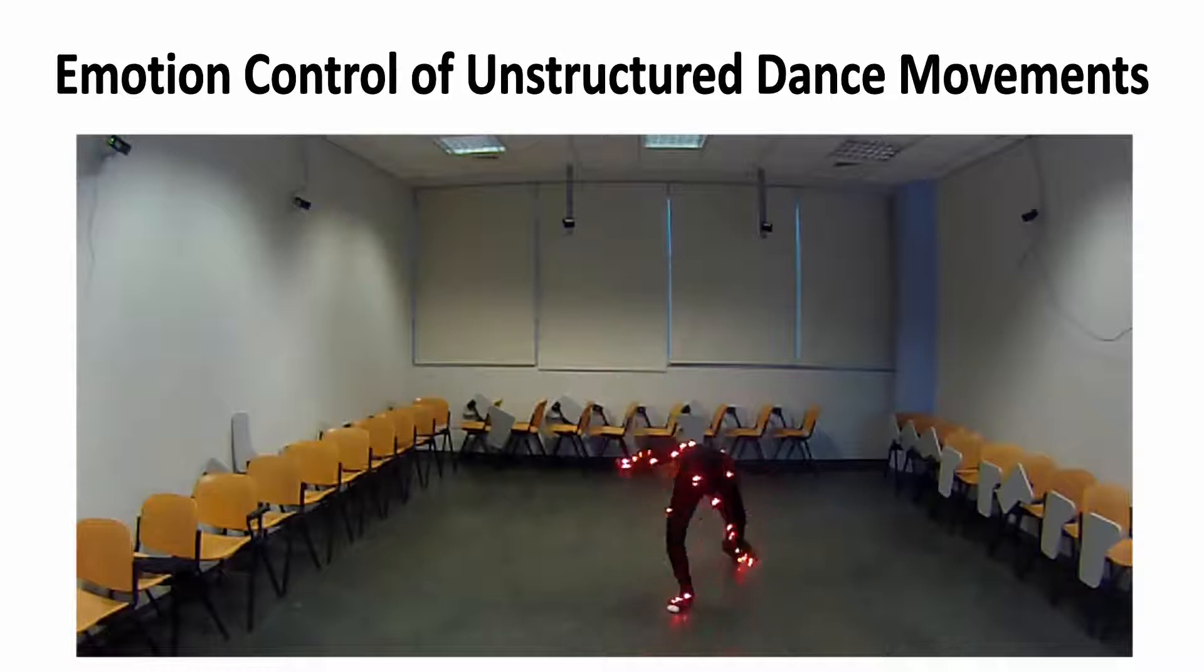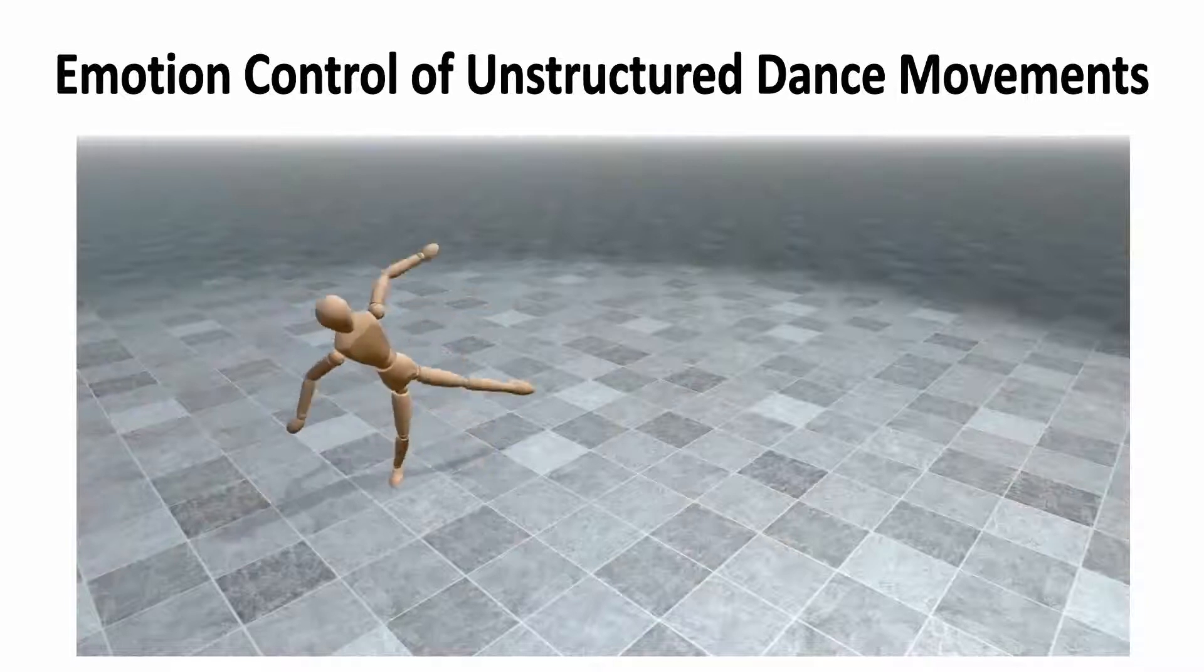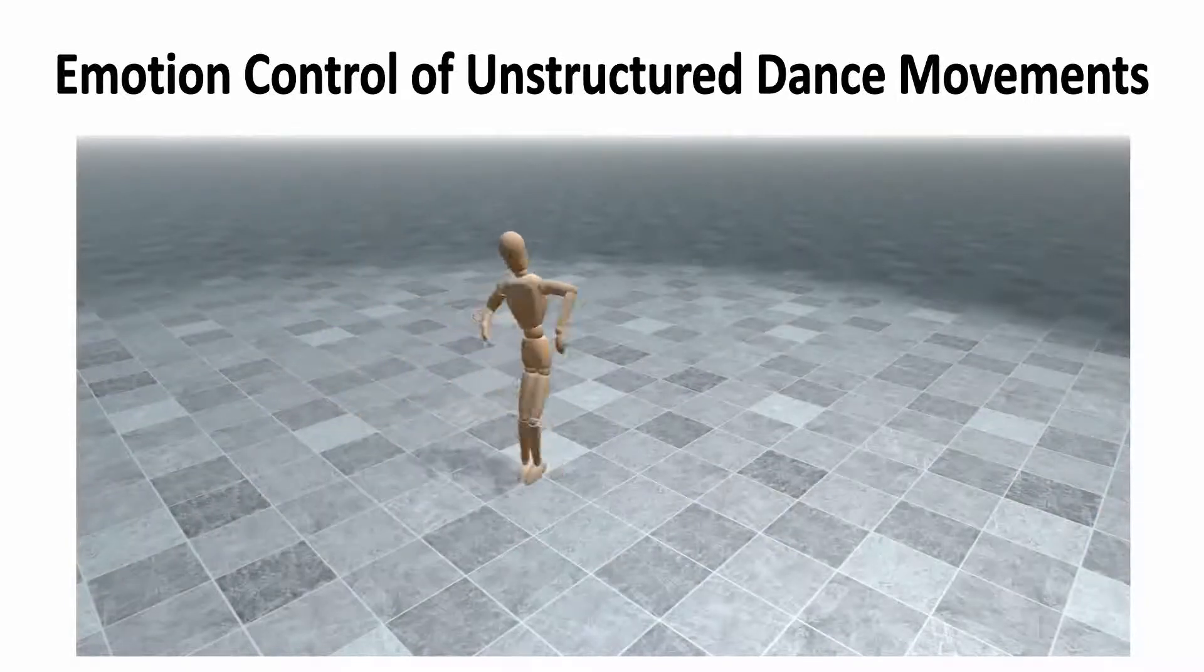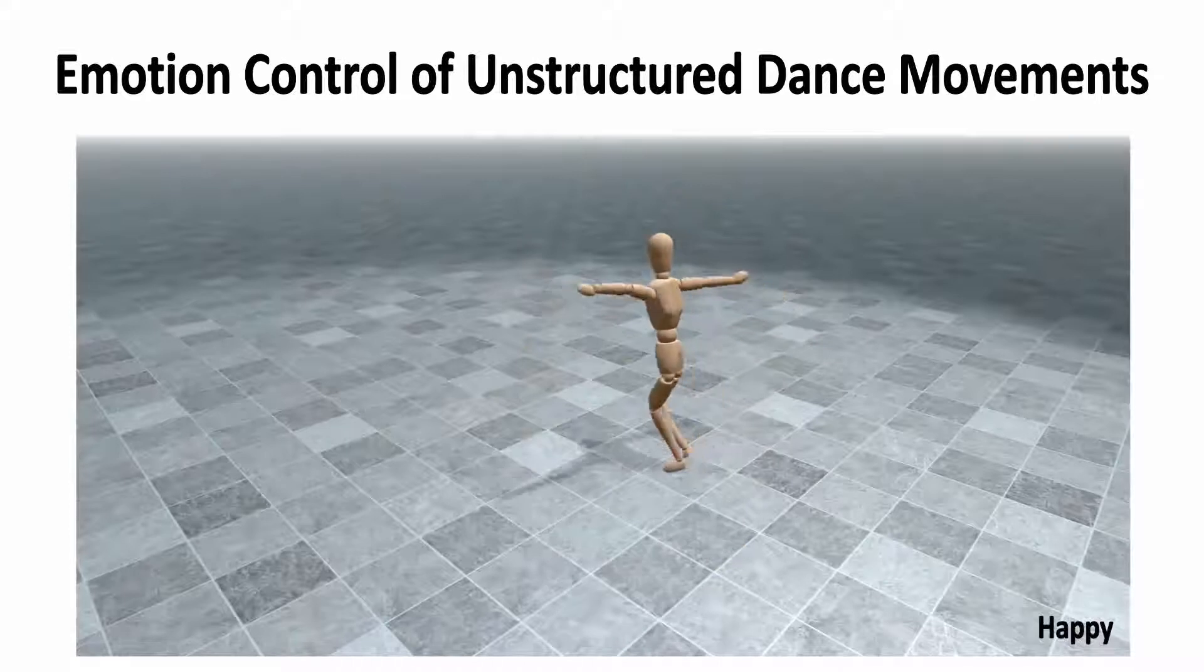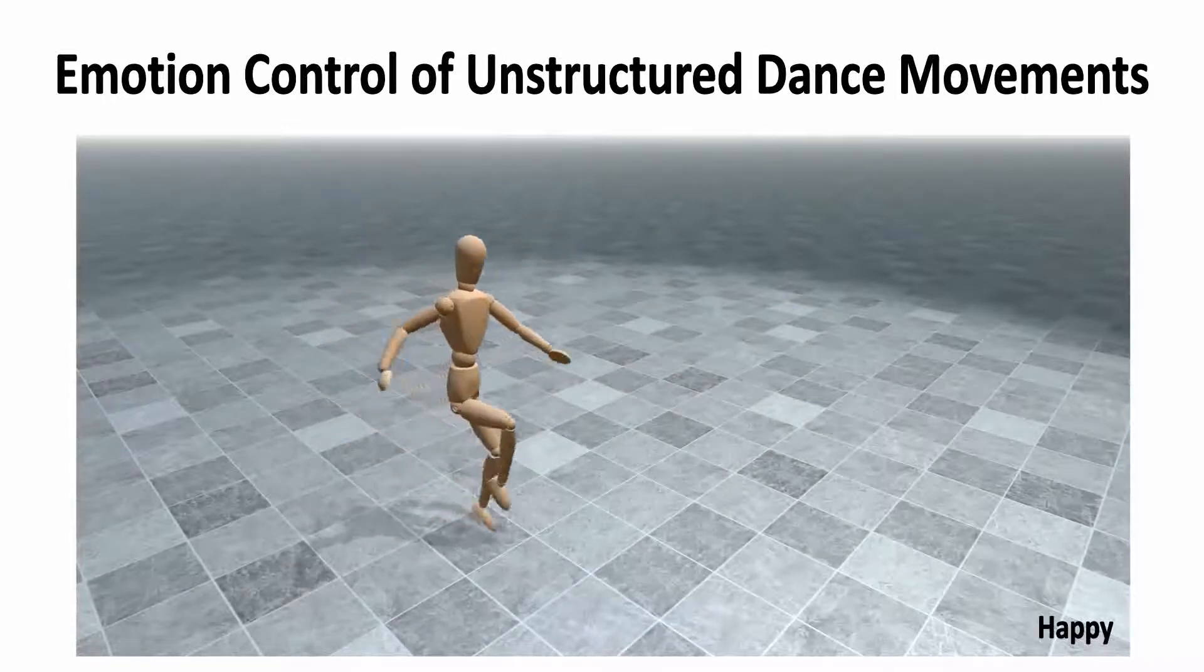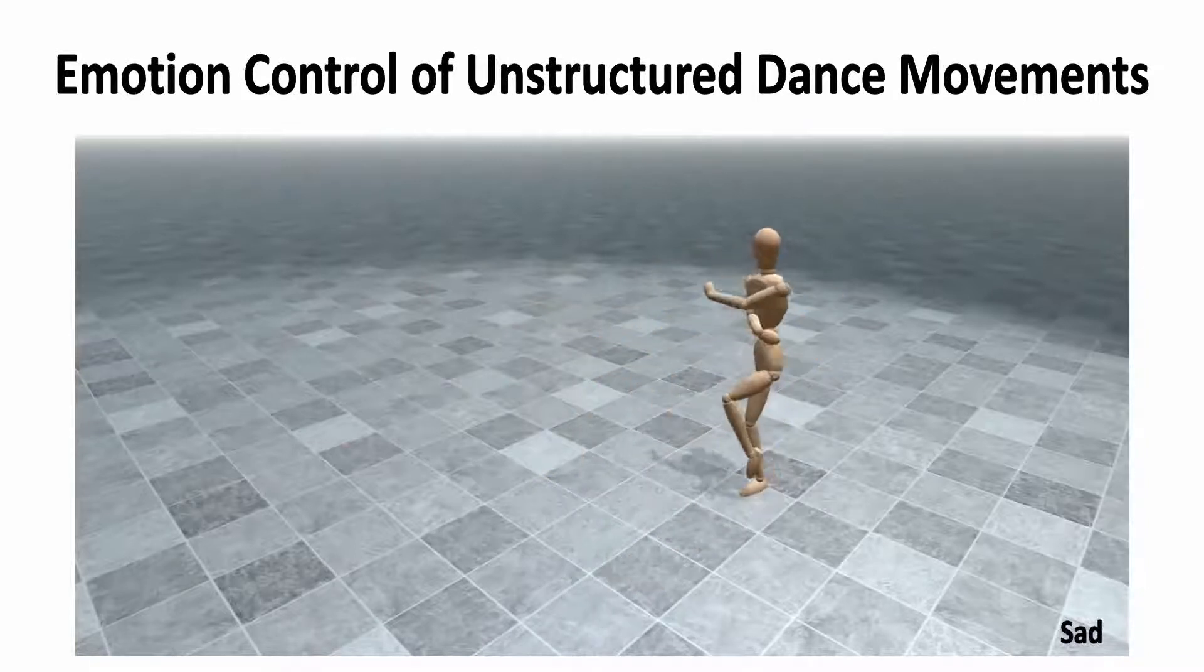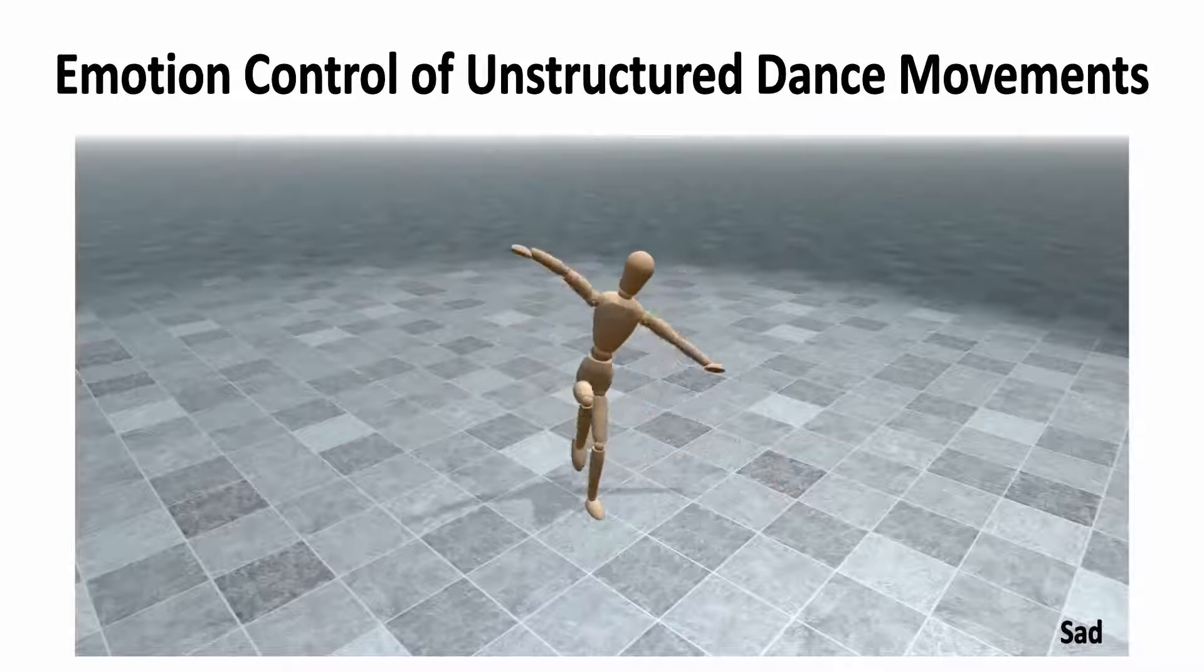Motion capture data is widely used as the basis for animating 3D characters in games and feature films. However, expressive and complex human motions, such as dancing, are difficult to modify while preserving the motion's style. Even for professional 3D artists, the task of stylizing captured motions remains challenging and time-consuming. In this work, we present a novel method that facilitates stylizing complex motion data based on implicit control and manipulation of the emotion expressed in the original motion.